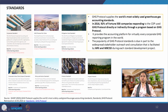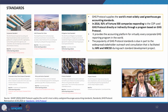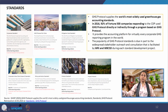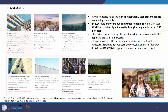The corporate value chain standard largely looks at scope 3 emissions through the entire value chain. It is not the direct emissions from assets owned by the company, but through the entire value chain — from where the raw material is being procured, to how delivery is happening to the end user — we look at the emissions that go into scope 3. This is the corporate value chain standard.